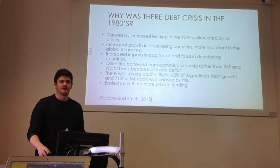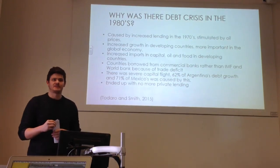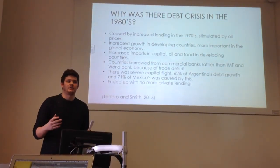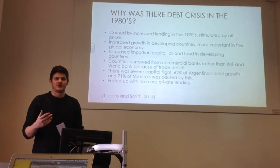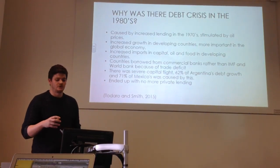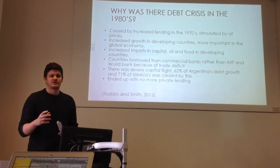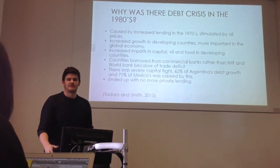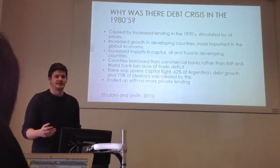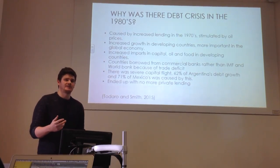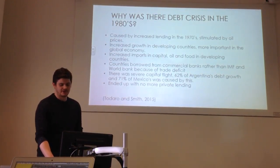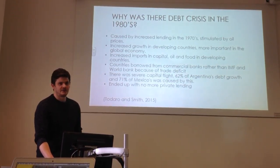Another cause of the debt crisis was the oil boom of the 1970s before it crashed in 1979. A lot of countries, particularly oil producers, were accumulating capital loans to maximise the use of their oil. Middle Eastern countries were saving profits from oil in commercial banks, which is why commercial banks were so ready to lend. When oil prices crashed in 1979 and again in 1986, this was detrimental to these economies and helped stimulate the 1980s crisis.